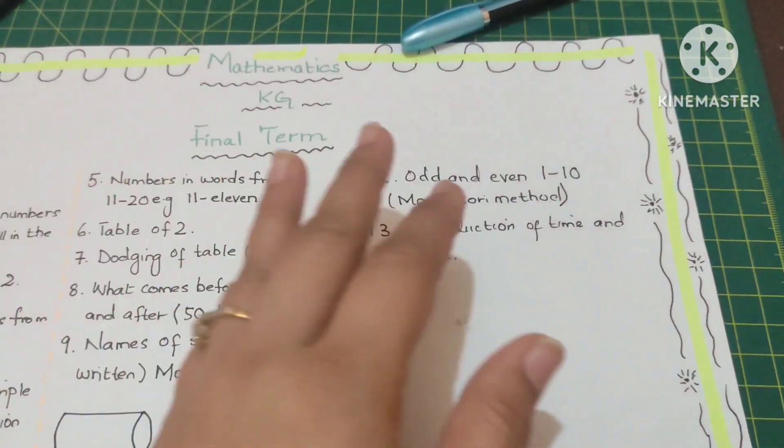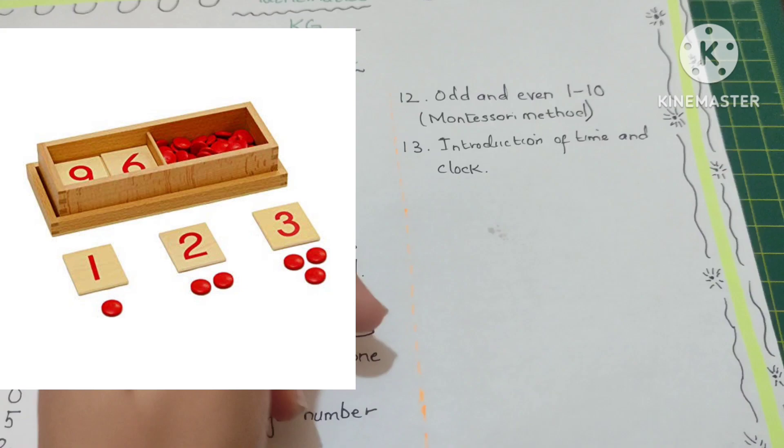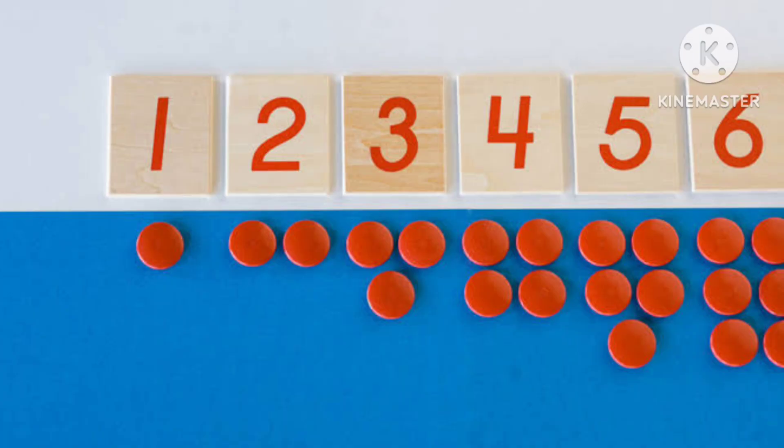Next one is odd and even. I'll put a picture over here so you can see how it's done in Montessori level.